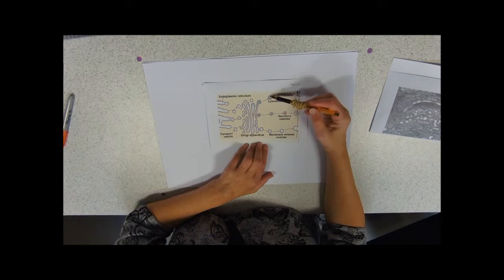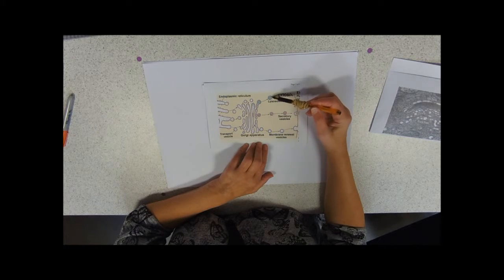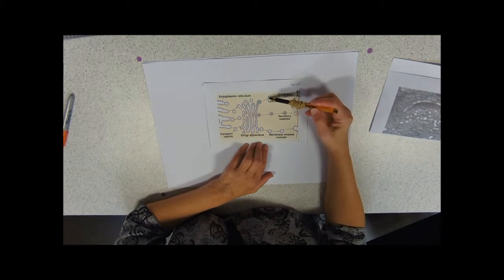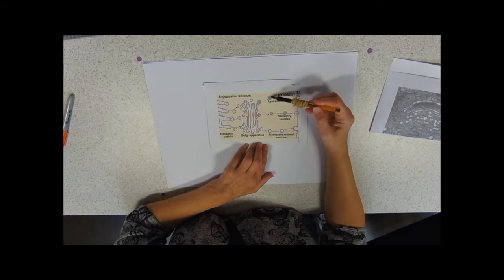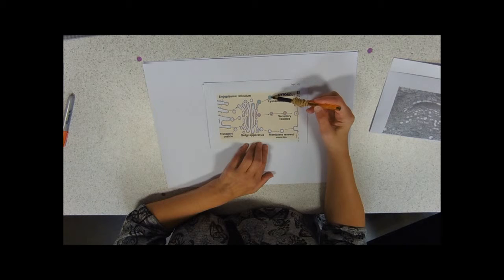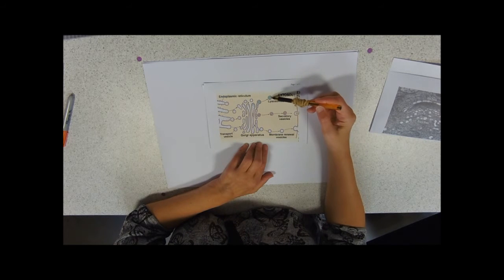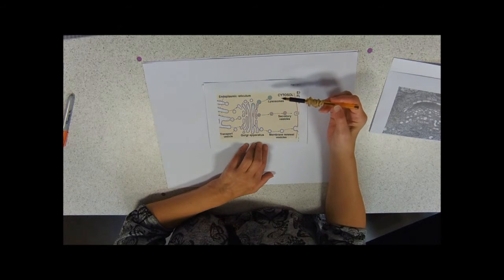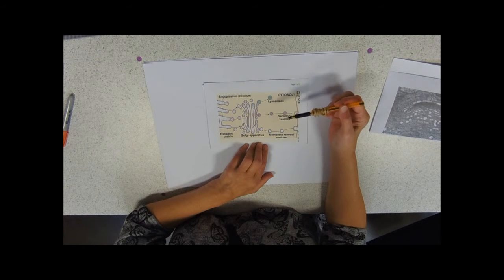Lysosomes, then, are these spherical membranes full of digestive enzymes. Their job, as we'll see in a later video, is to digest stuff coming into the cell.